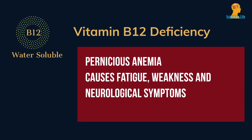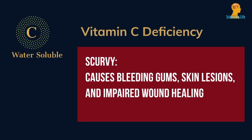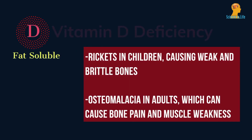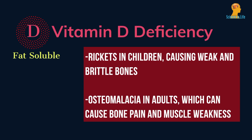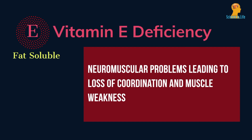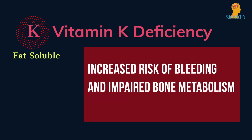Deficiency in vitamin C causes scurvy, which can cause bleeding gums, skin lesions, and impaired wound healing. Deficiency in vitamin D causes rickets in children, leading to weak and brittle bones, and osteomalacia in adults, which can cause bone pain and muscle weakness. Deficiency in vitamin E can cause neuromuscular problems such as loss of coordination and muscle weakness. Deficiency in vitamin K increases the risk of bleeding and impairs bone metabolism.